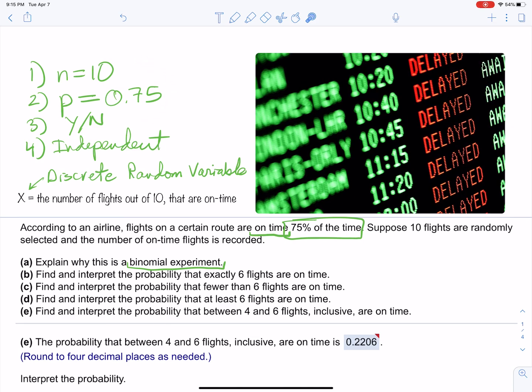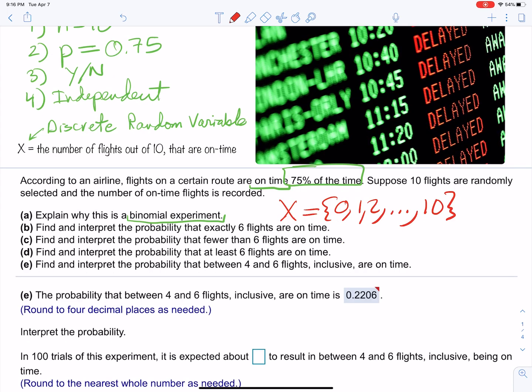So we know it's a binomial random variable. The number of flights out of 10 that are on time, that is a binomial random variable. Also, we know that X can be equal to either 0 or 1 or 2, all the way up to 10.